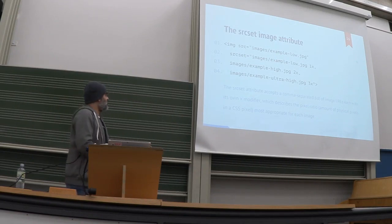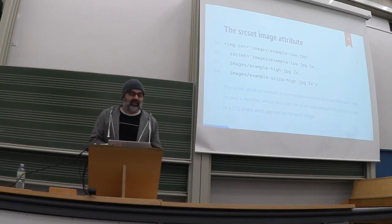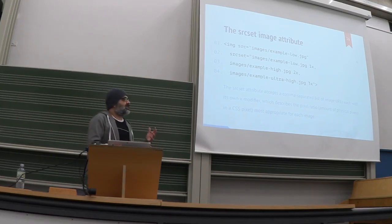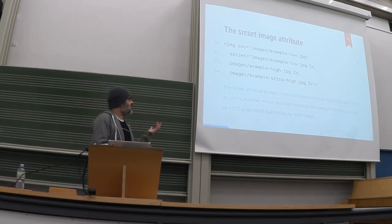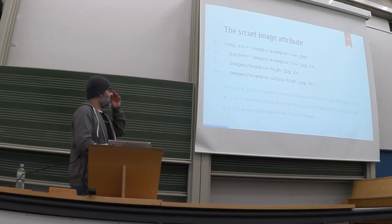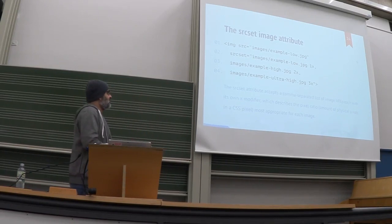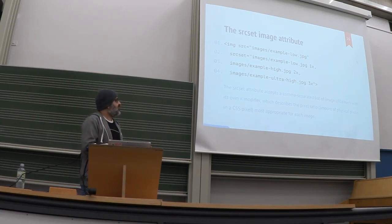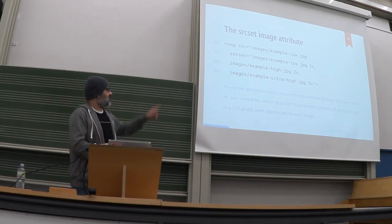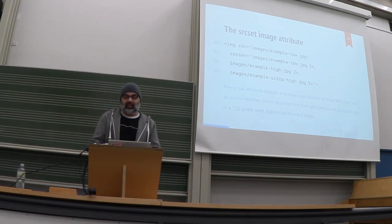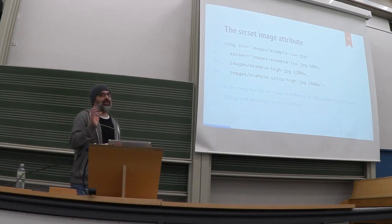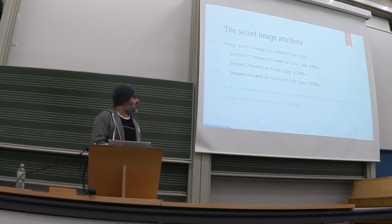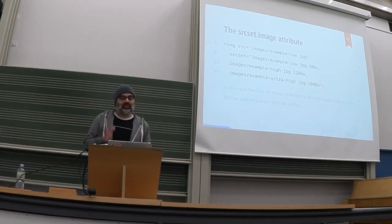HTML 5.1 gives us responsive images. The first part is srcset. Srcset lets you define the same picture in higher resolution — for retina displays or displays with higher pixel density. You can define different paths for pictures with higher resolution and add a 1x, 2x, 3x descriptor. Instead of that, you can also define the width of the picture in pixels, for example 600w, which means 600 pixels.